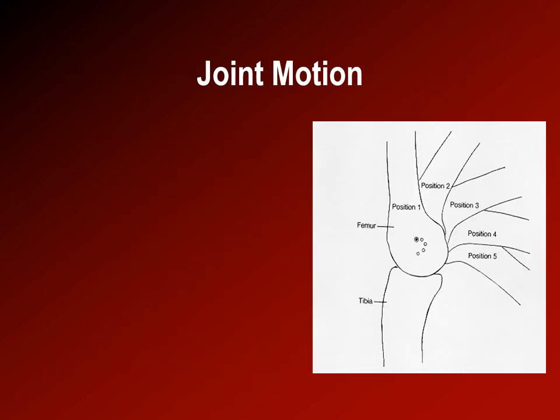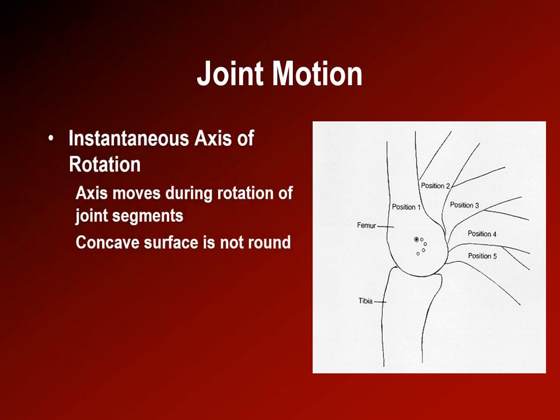Because convex joint surfaces are not exactly round, the axis of rotation does not stay in the same place within the convex joint surface. The knee is a good example: the condyles of the knee are actually oblong — more flattened distally. As the knee flexes, the axis of rotation moves backward, and as the knee extends, it moves upward.